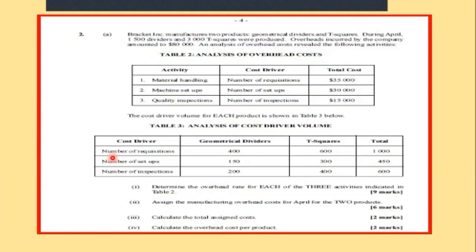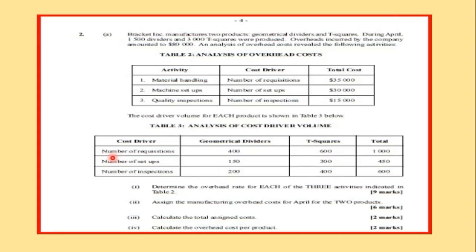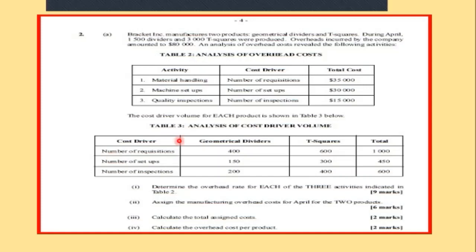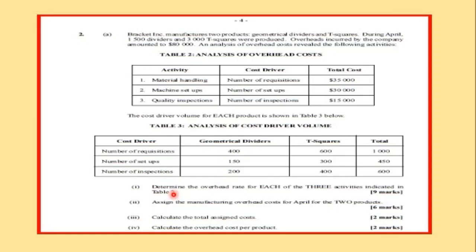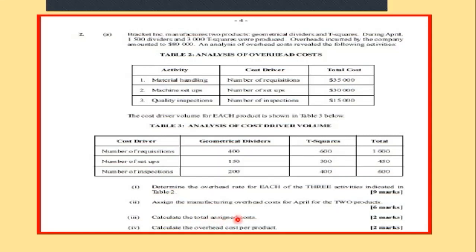We have before us the data for part A. Let's read what is required first. We need to determine the overhead rate for each of the three activities indicated in the table, assign the manufacturing overhead costs for April to the two products, calculate the total assigned costs, and calculate the overhead costs per product.